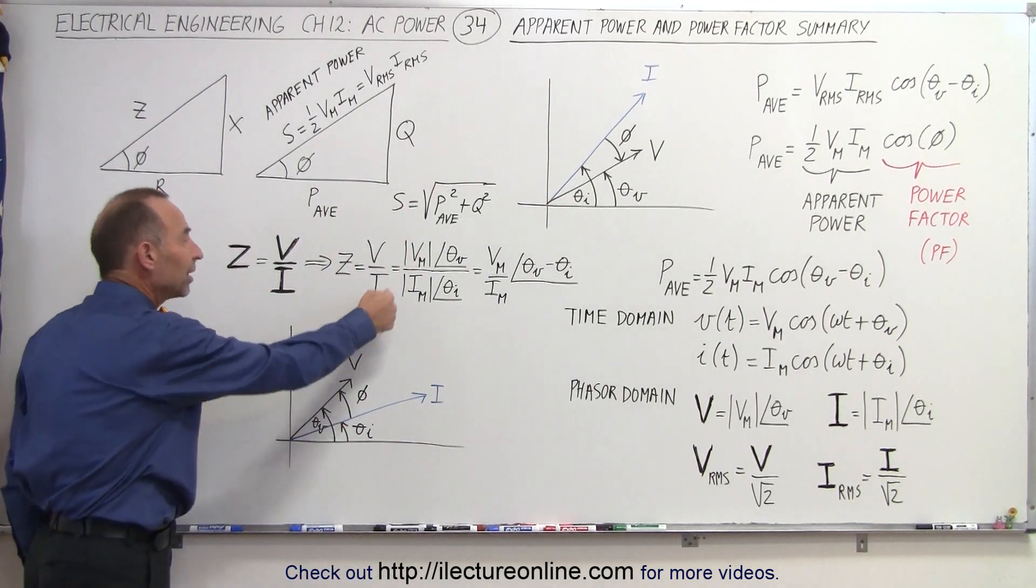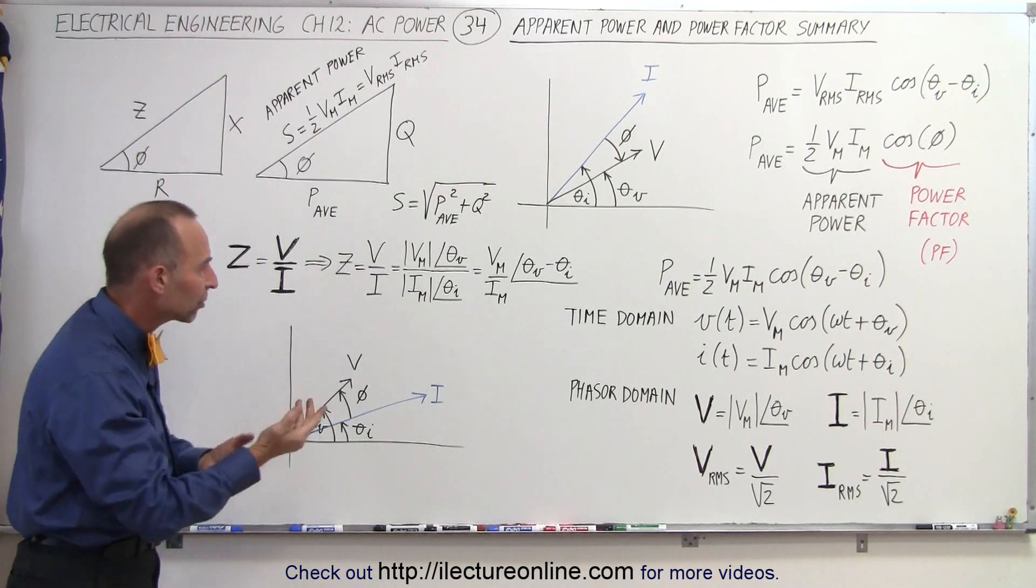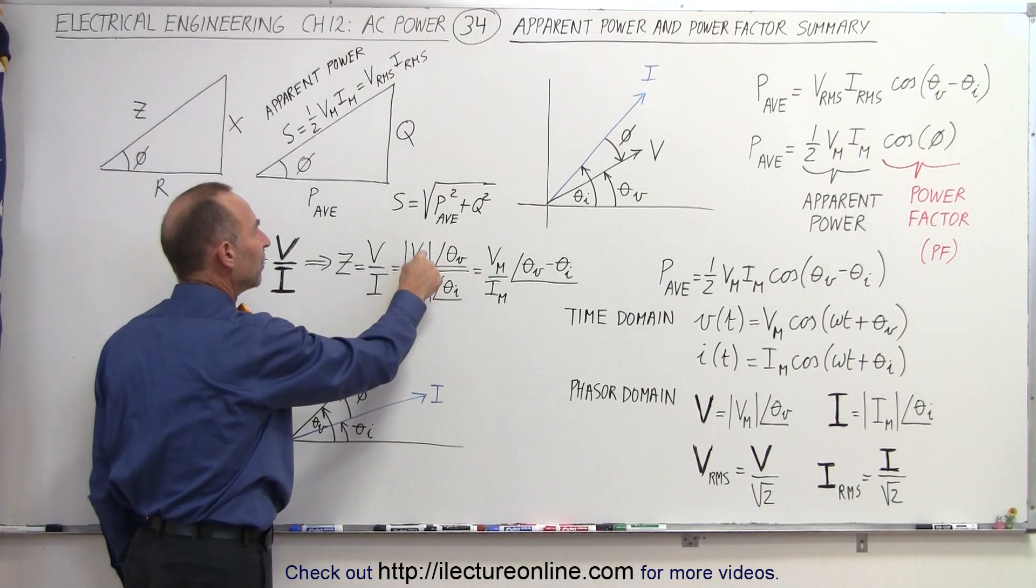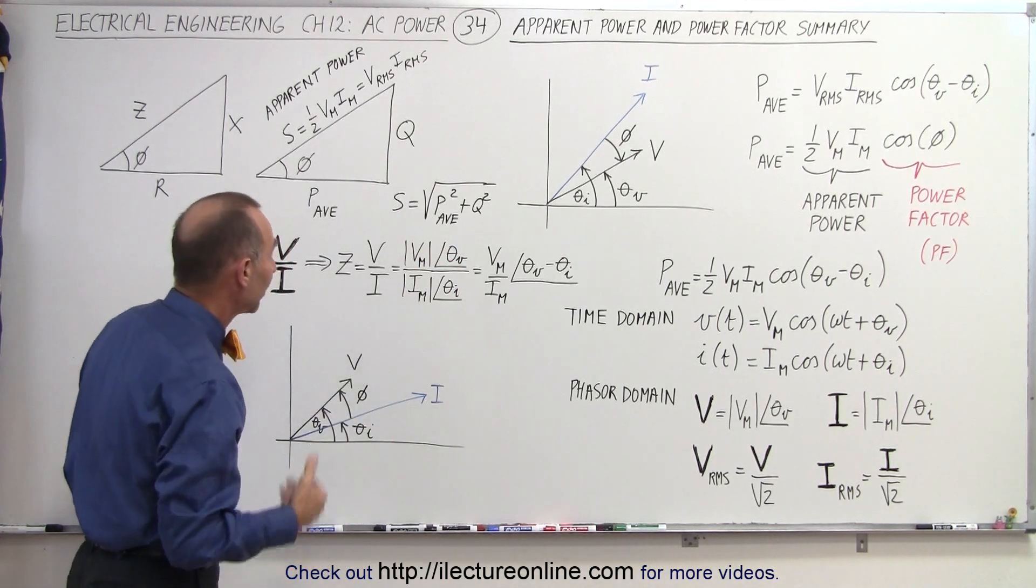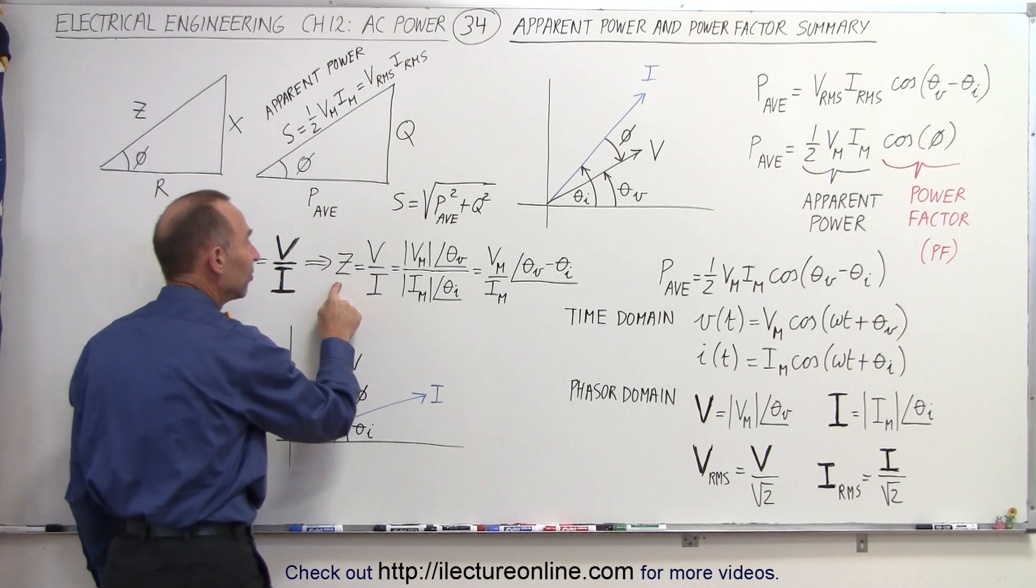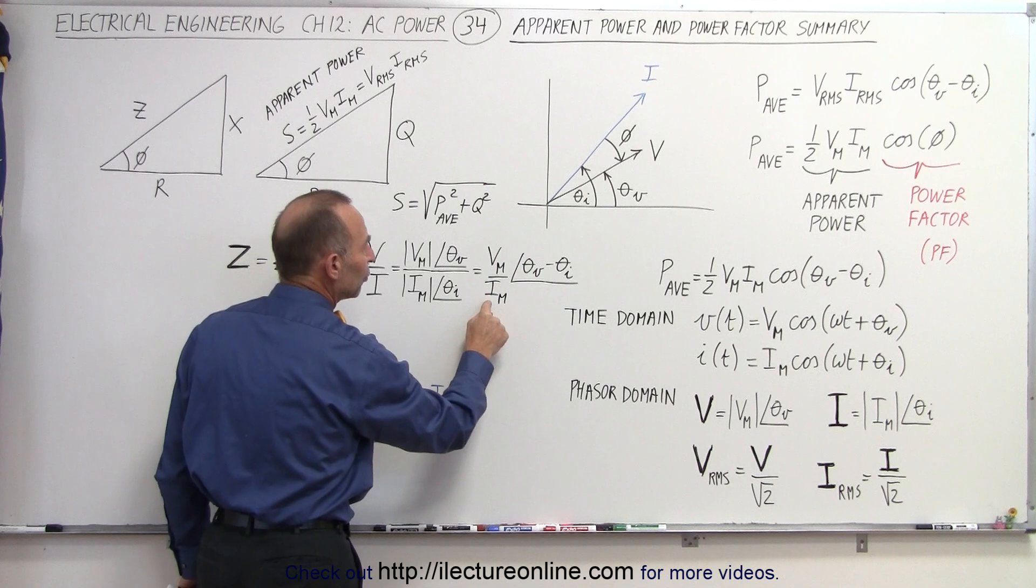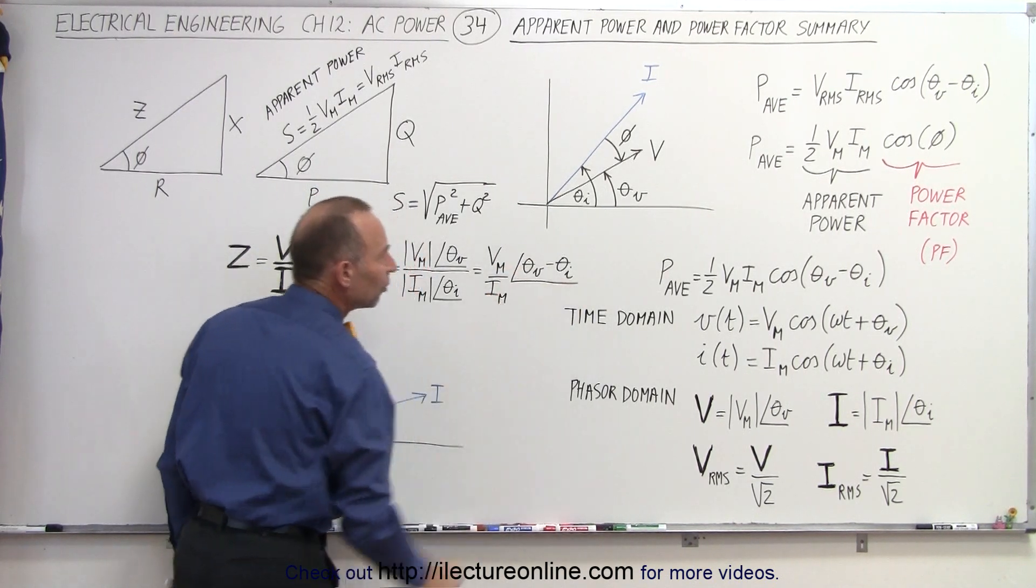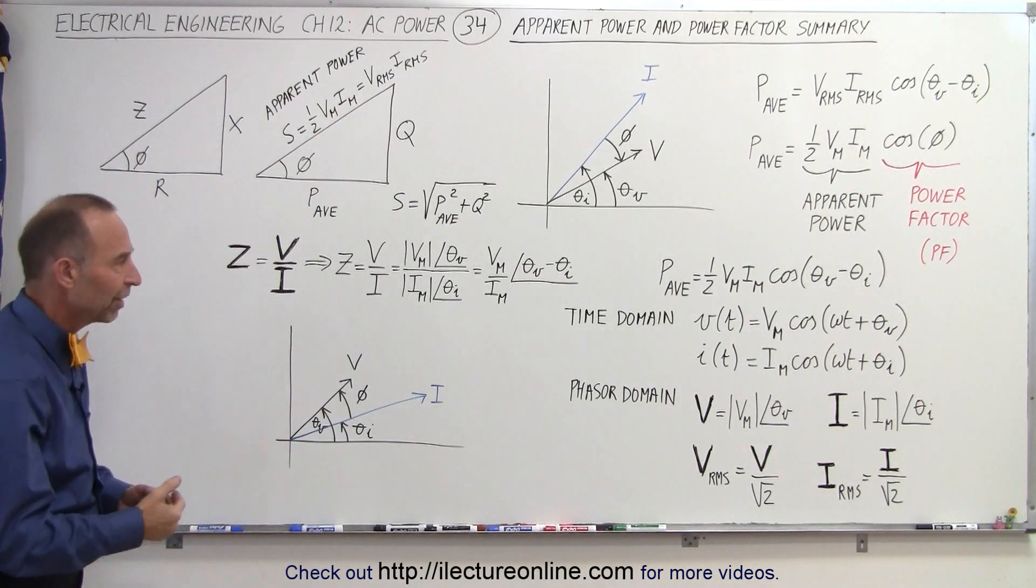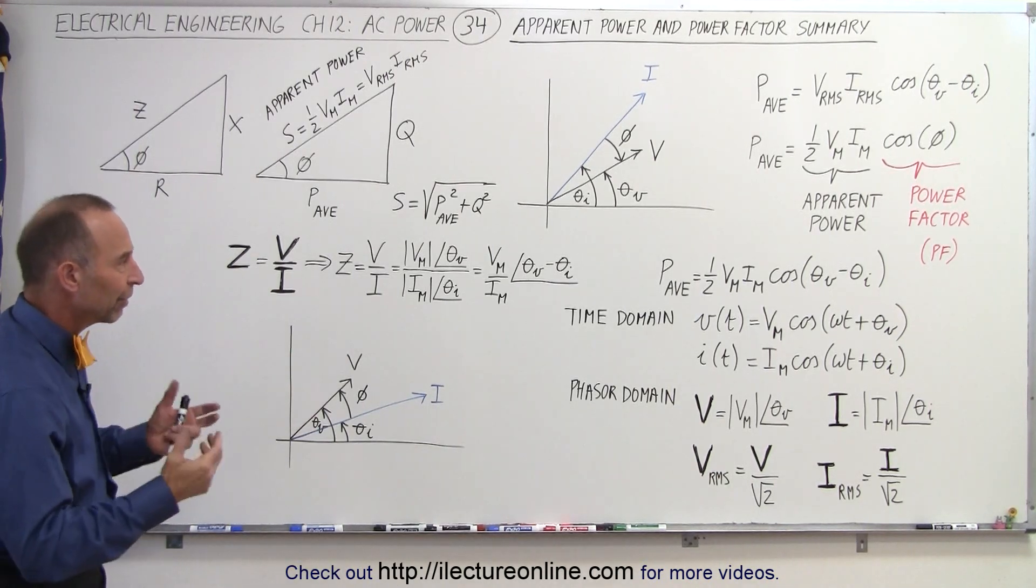But if we see it written like this, it's again understood that these are phasors, therefore they have magnitude and direction, so they can be represented by the magnitude of the two phasors and the direction relative to their phase angle. And so we can then see that the impedance is simply equal to the magnitude of the phasor of the voltage divided by the magnitude of the phasor of the current times the phase angle difference between the two. The voltage minus the phasor of the voltage minus the phasor of the current.